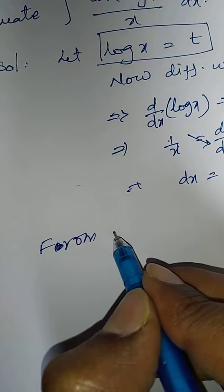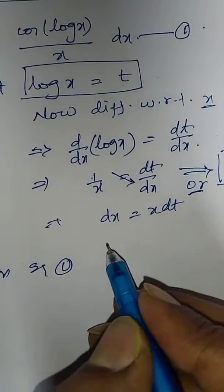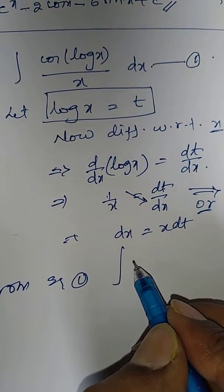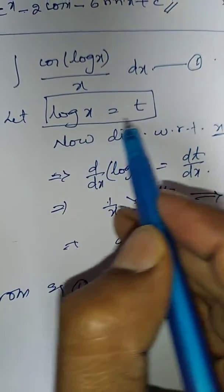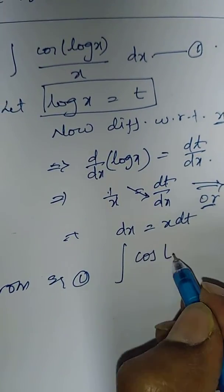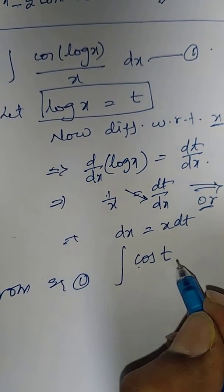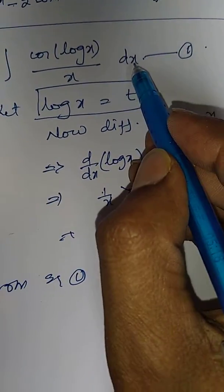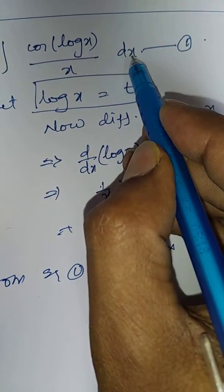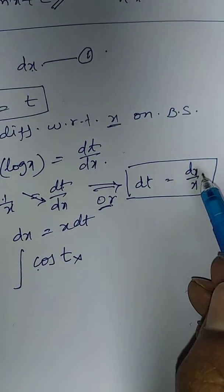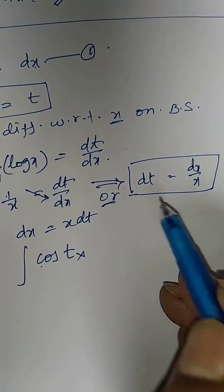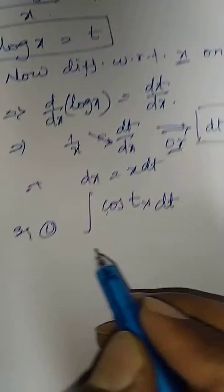From equation 1 integration, cos of log x, but log x is equal to t, substitute t into this. dx by x is dt. This is dt.